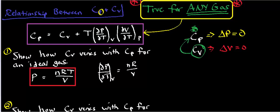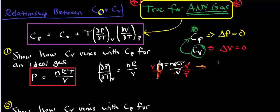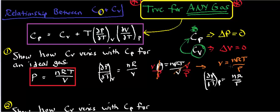Now, if I want to find the partial of V with respect to T at constant pressure, I can't take it directly from P = nRT/V, since that form is solved explicitly for pressure. However, I can multiply both sides by V and divide by P to get V = nRT/P. Now I can explicitly take the partial of V with respect to T at constant pressure, and that's simply going to be nR over P.